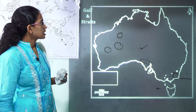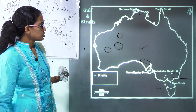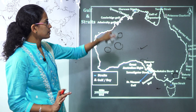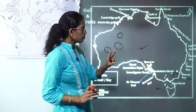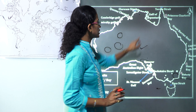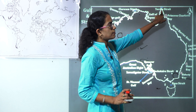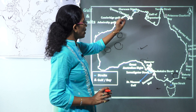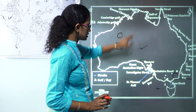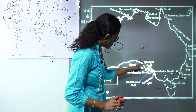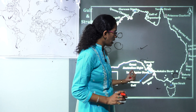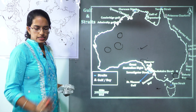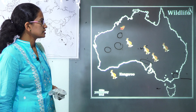For gulfs and straits: the two major gulfs are the Great Australian Bight and the Gulf of Carpentaria. The major straits are Torres Strait and Bass Strait; besides those you have smaller straits like Clarence Strait. Besides the gulfs you have smaller bays like Encounter Bay.